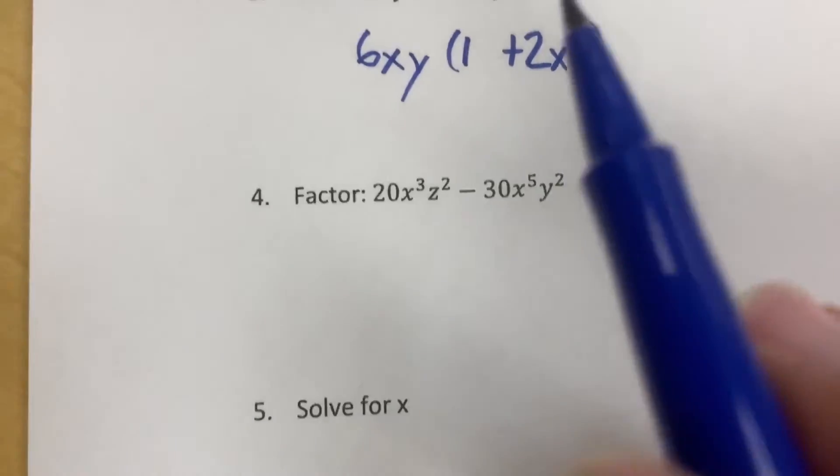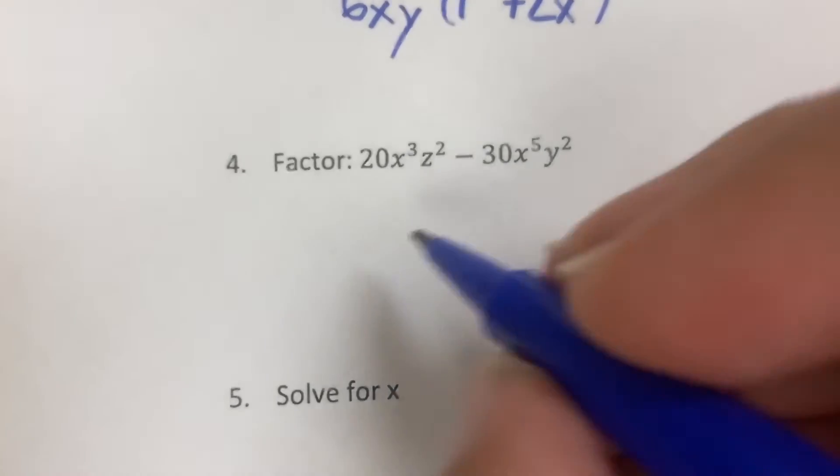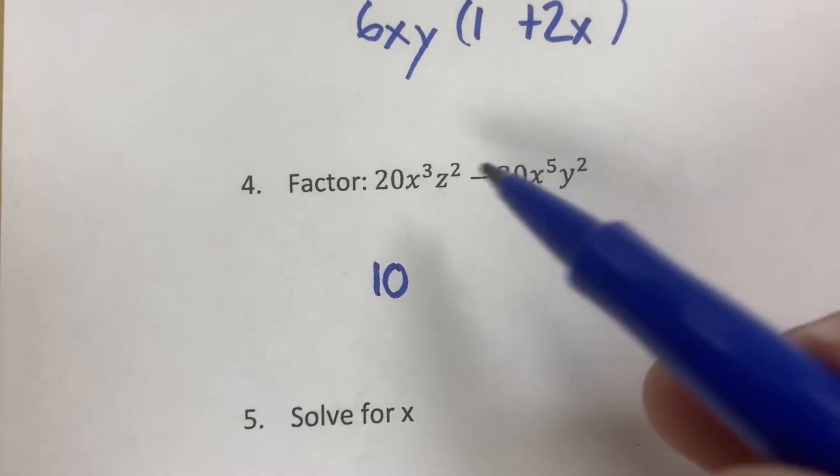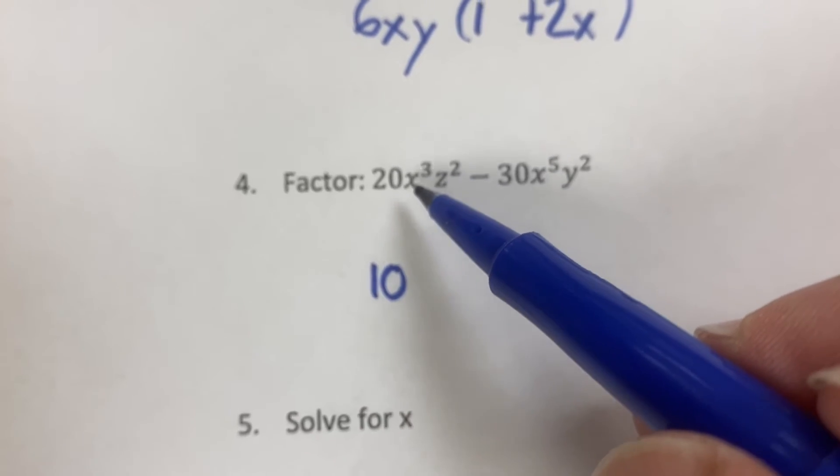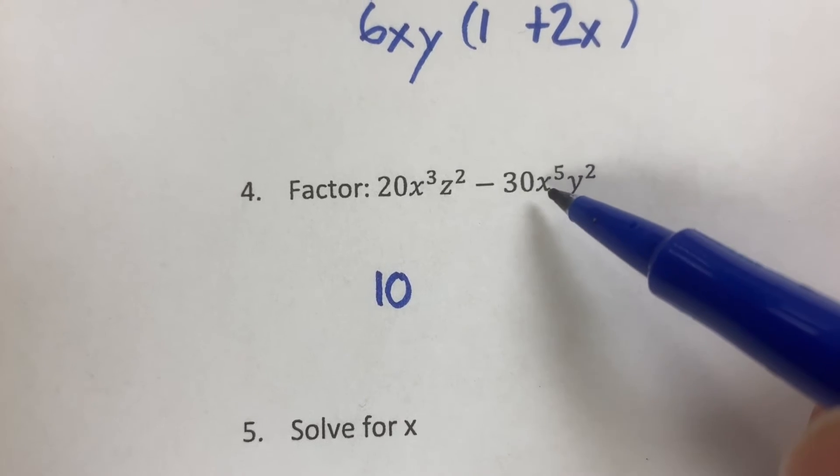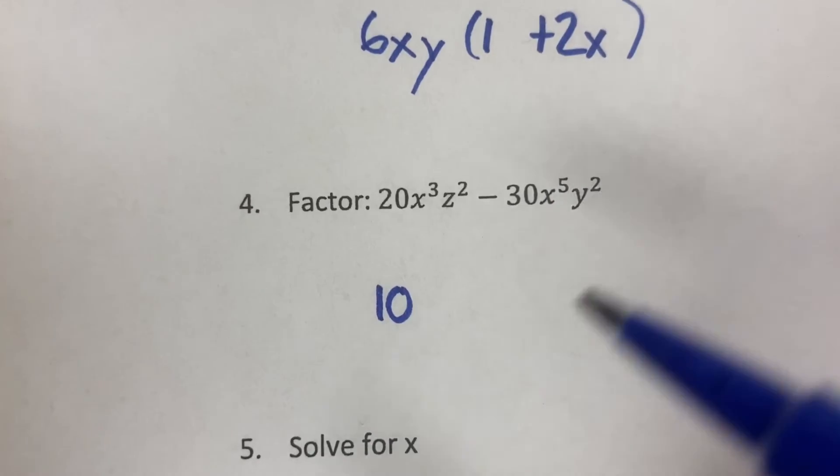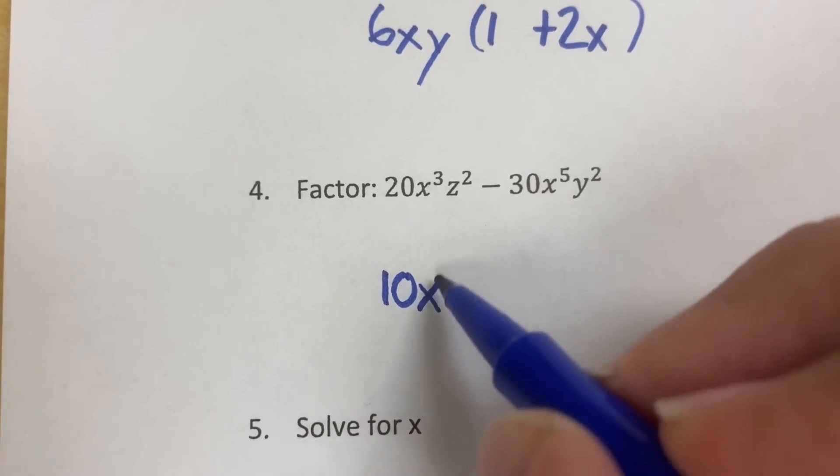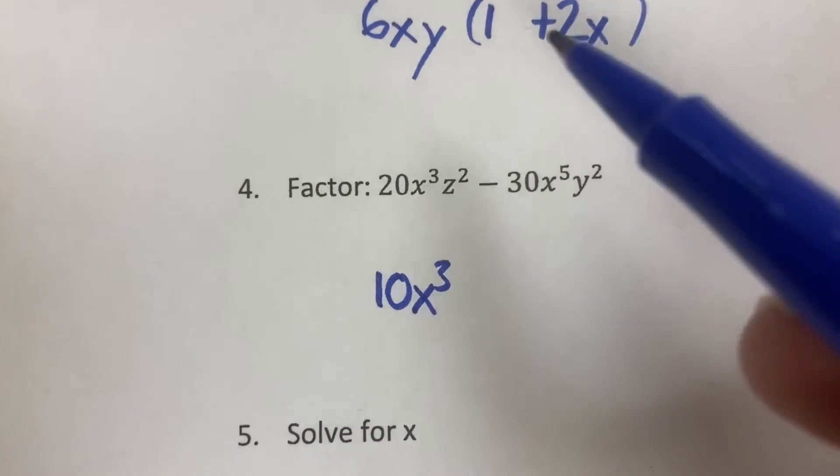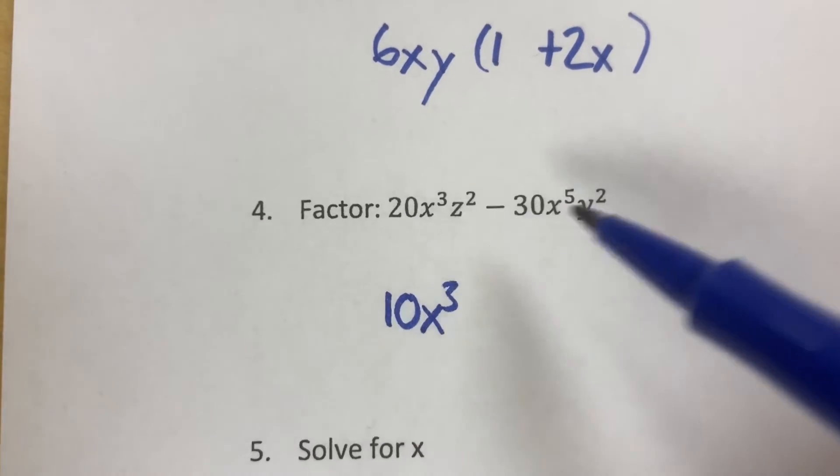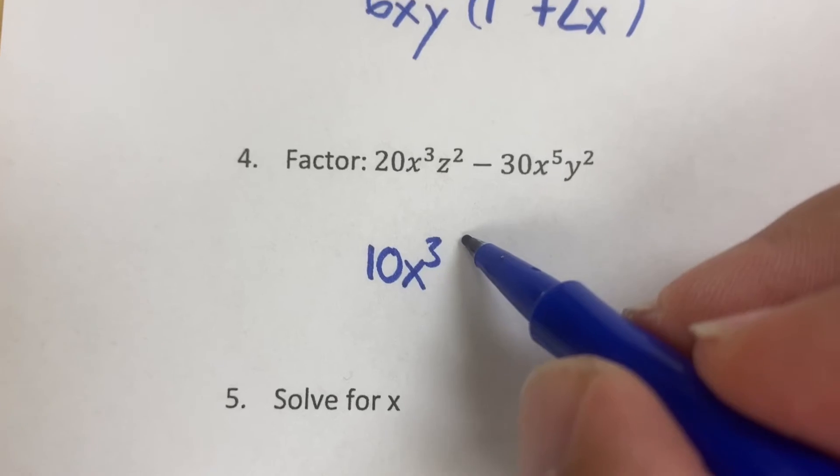Same thing here. What divides perfectly into 20 and 30? The answer is 10. How many x's do they have in common? Well, this has 3 x's. This has 5 x's multiplying with each other. So how many do they have in common? They have 3. So I'm going to take 3 out of there. How many z's do they have in common? None. How many y's do they have in common? None. So that's it. That's all I'm removing.